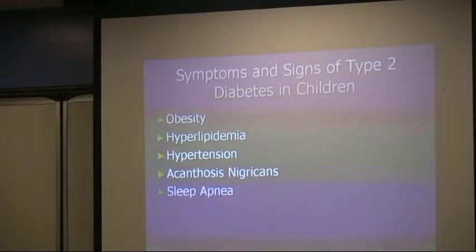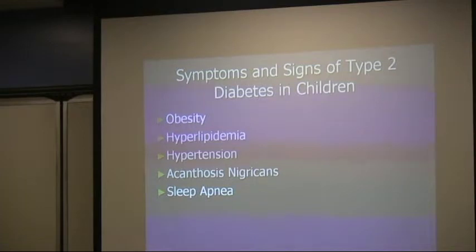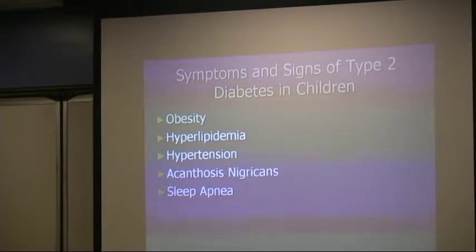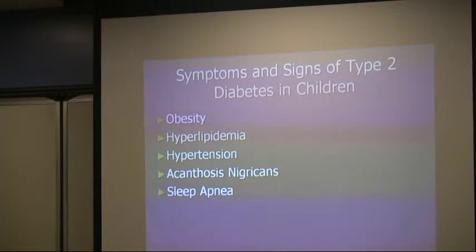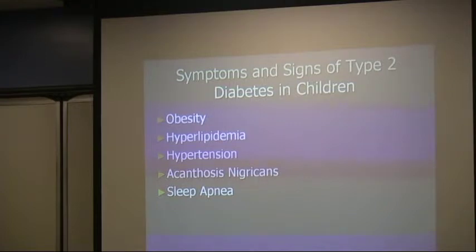What symptoms are we looking for? Type 2 diabetes is a slower progressing disease compared to type 1, though it may not be as slow as in the adult population. There are certain symptoms and signs to look for before sugars become significantly abnormal. Number one is obesity.